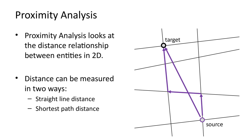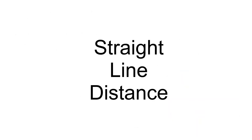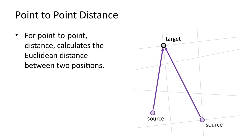Let's first look at some examples of straight-line distances. Straight-line distances can be measured between different types of entities. The simplest are point-to-point distances. These are calculated using the Euclidean distance formula.